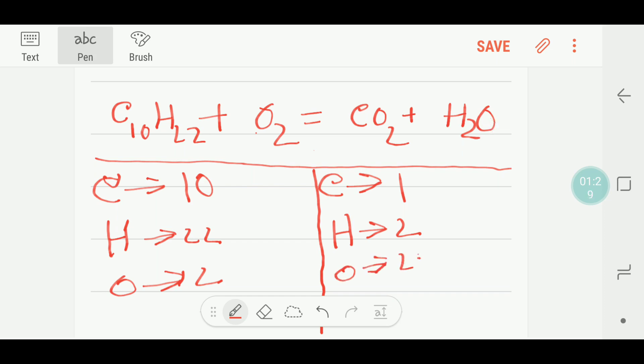To balance the number of carbon, I can multiply here by 10. So I am getting 10 carbon. If I multiply by 10, then this 10 will come before the carbon, right here.